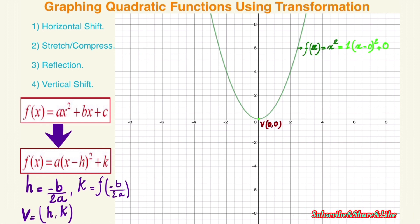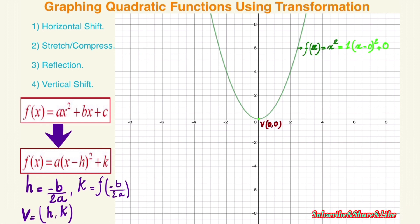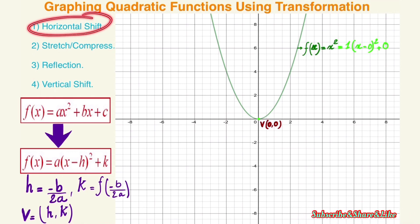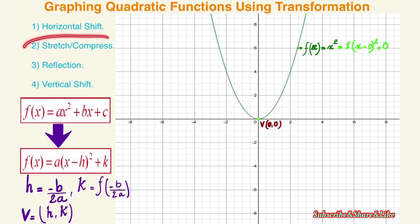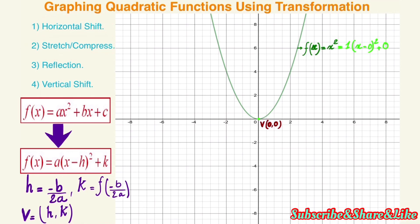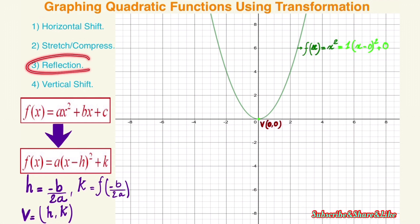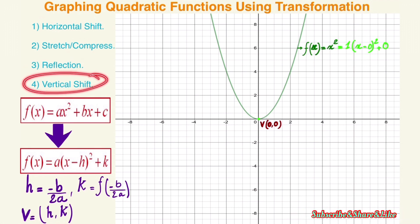There are many kinds of transformation. We have horizontal shifting, and we have stretch and compress, and we have reflection, and we have vertical shifting.